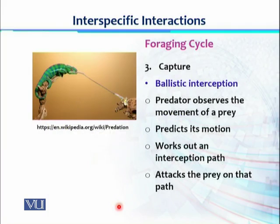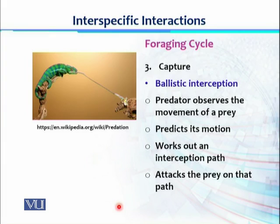Another capture strategy is ballistic interception. This follows the principles of ballistic motion, because the prey is already moving and the predator is waiting. The predator observes the movement of the prey, predicts its motion — the speed, velocity, and direction. They work out an interception path: if the prey continues its motion, a trajectory is formed, and the predator determines at which point on that trajectory it must attack to catch the moving prey. The example is the chameleon, which uses its very flexible and protrusible tongue. The chameleon first assesses the insect's trajectory and then attacks it.